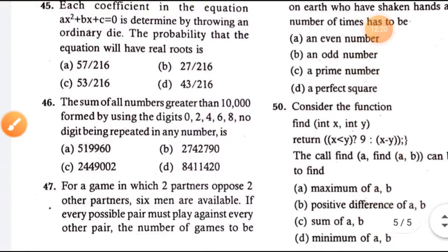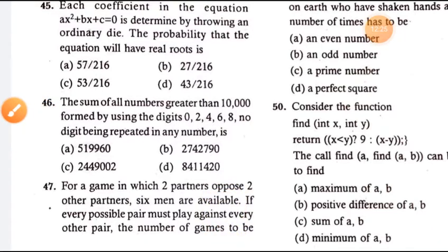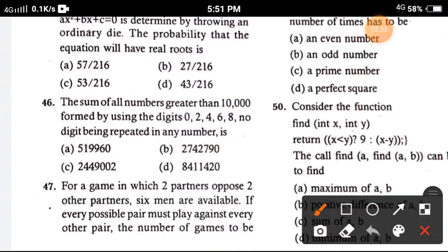Question 46: The sum of all numbers greater than 10,000 formed by using 0, 2, 4, 6, 8 with no digit being repeated in any number — the correct answer is option B, 2,742,790.